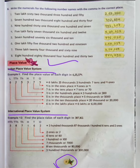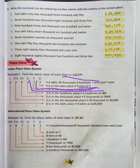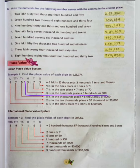Let's see example 11. Find the place value of each digit in 6,25,374. First we will see the 1's place. 4 is in the 1's place, which is equal to 4 ones, or 4. Then 7 is in the 10's place, equal to 7 tens, or 70. Then 3 is in the 100's place, equal to 3 hundreds, or 300.